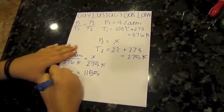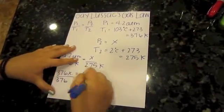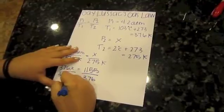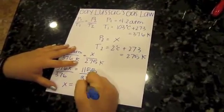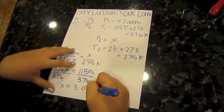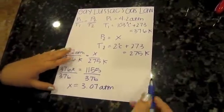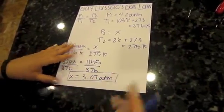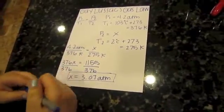Then you divide both sides by 376, and X is equal to 3.07 ATM. So pressure 2 was 3.07 ATM.